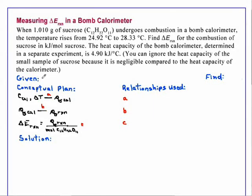Measuring delta E of reaction in a bomb calorimeter. When 1.010 gram of sucrose, C12H22O11, undergoes combustion in a bomb calorimeter, the temperature rises from 24.92 degrees C to 28.33 degrees C.